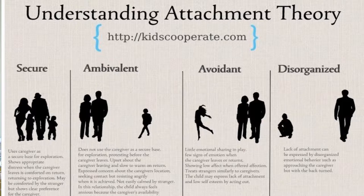With the avoidant attachment classification, there's no distress when the caregiver leaves, and the child is okay with a stranger's attention. With the disorganized attachment style, you see strong proximity seeking followed by strong avoidance at the same time.